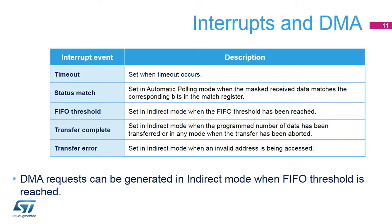The Quad SPI memory interface has five interrupt sources: timeout, status match (when the masked received data matches the corresponding bits in the match register in automatic polling mode), FIFO threshold, transfer complete, and transfer error. DMA requests can be generated in indirect mode when the FIFO threshold is reached.